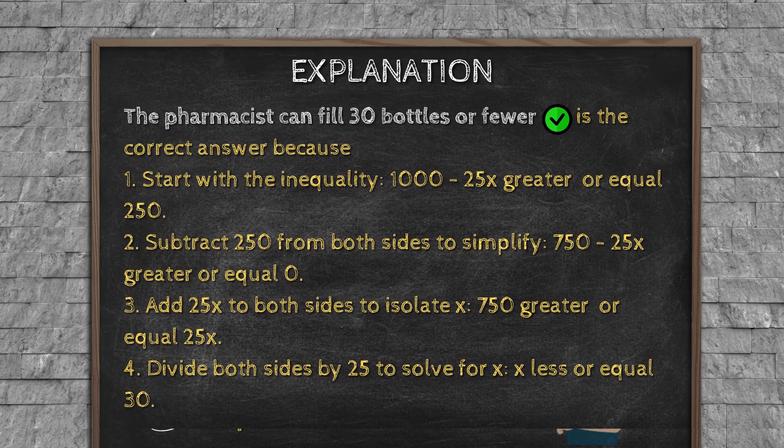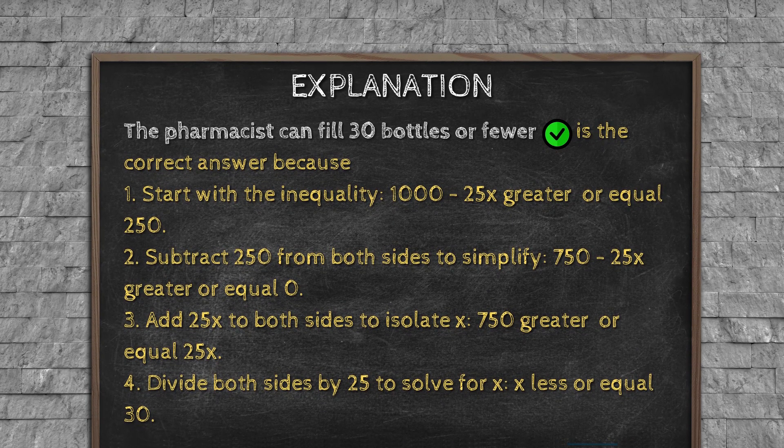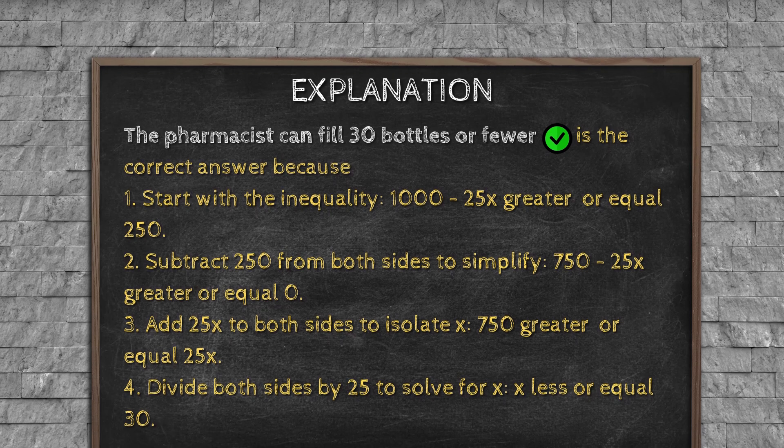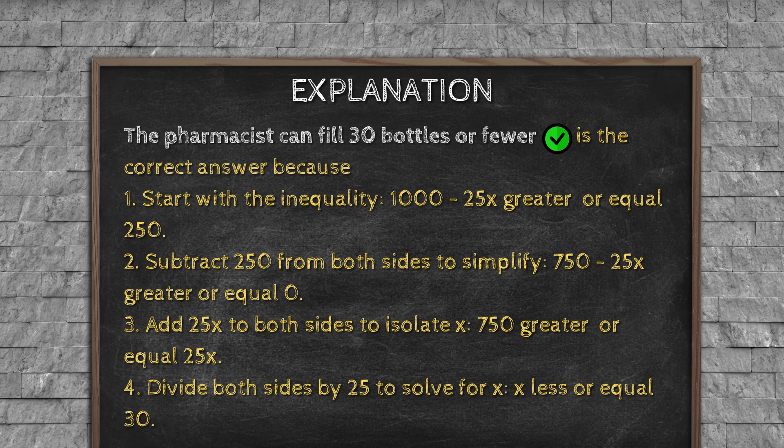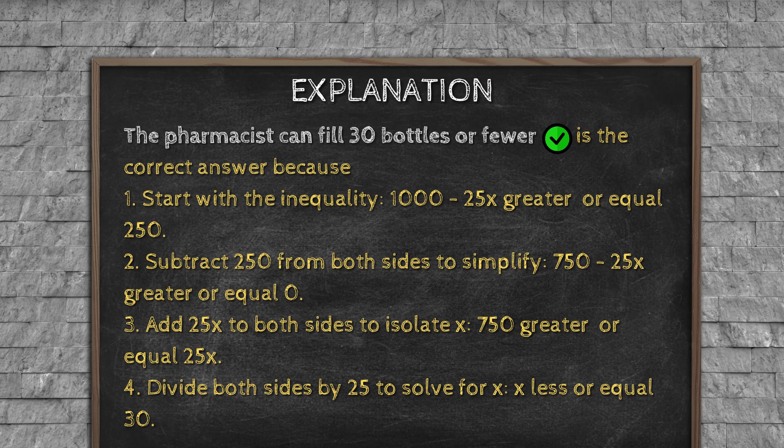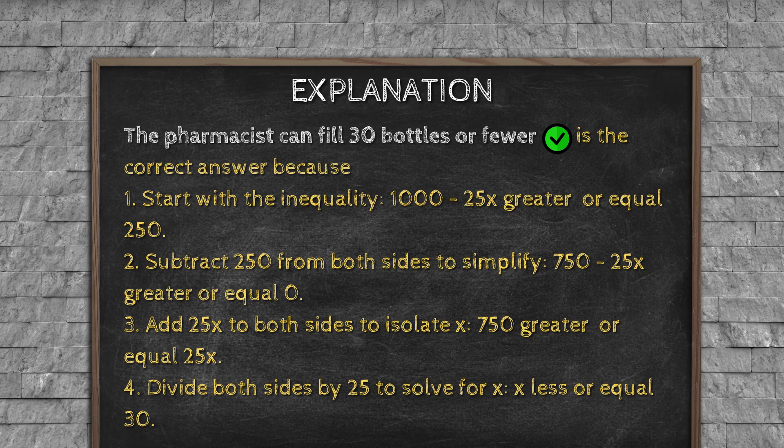Explanation: The pharmacist can fill 30 bottles or fewer is the correct answer, because: 1. Start with the inequality: 1000 - 25x ≥ 250. 2. Subtract 250 from both sides to simplify: 750 - 25x ≥ 0. 3. Add 25x to both sides to isolate x: 750 ≥ 25x. 4. Divide both sides by 25 to solve for x: x ≤ 30.